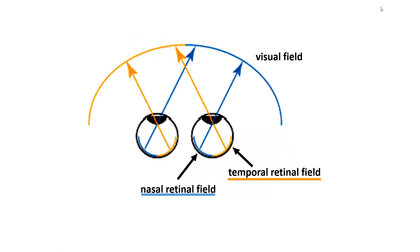Here we see basically the beginning of the visual pathway — the visual field extending out anterior to the body, so that's everything that we're perceiving in the environment around us. The stimulus then enters the eye, refracting at the cornea, and projecting onto the retinal fields of each eye. Notice that the entire visual field projects onto the entire retinal field of each eye separately.